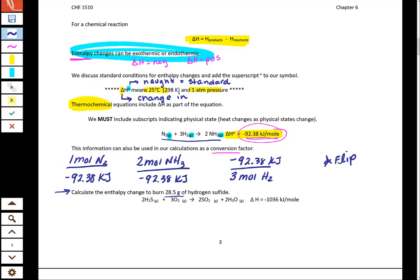When we looked at our conversion factors up here, notice how they were all per mole, and in this problem we're given grams. So step one should be to convert your grams of hydrogen sulfide into moles of hydrogen sulfide.